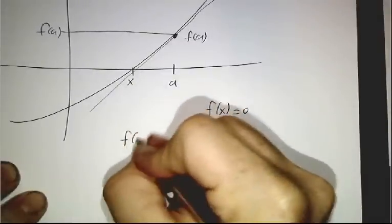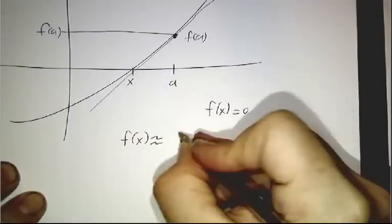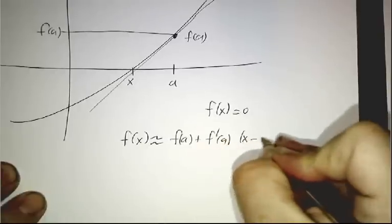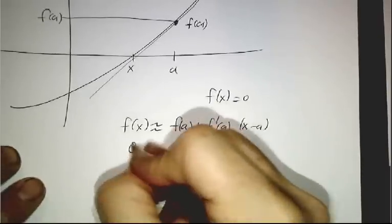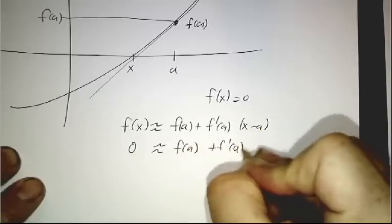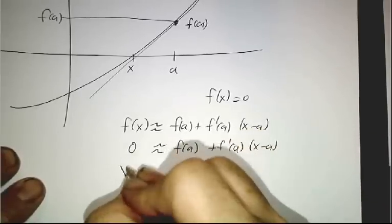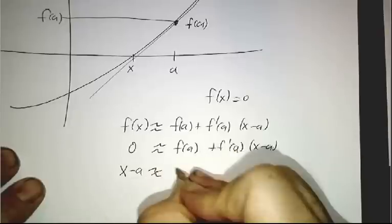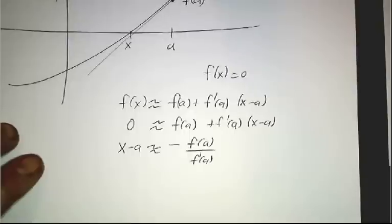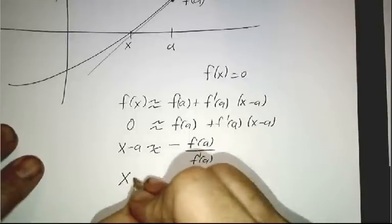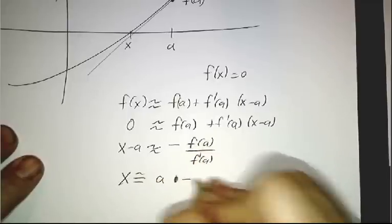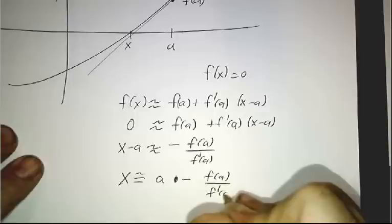But we know that f of x is approximately f of a plus f prime of a times x minus a. So x minus a is approximately minus f of a over f prime of a. And now we've got our approximation. x is approximately a minus f of a over f prime of a.